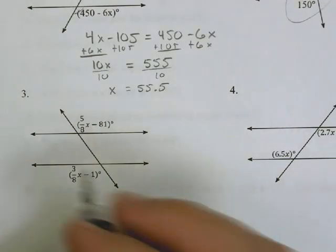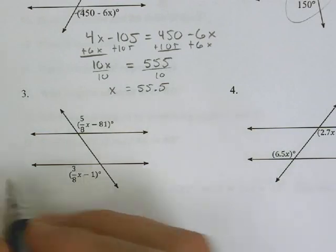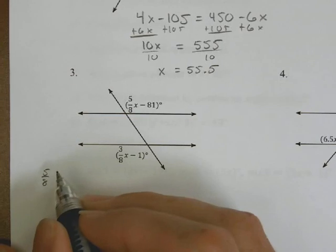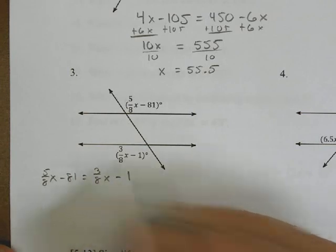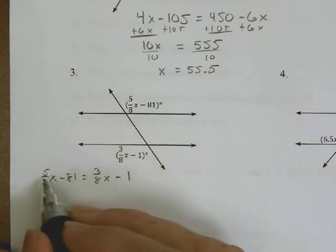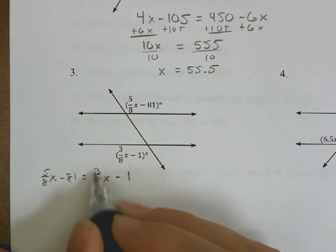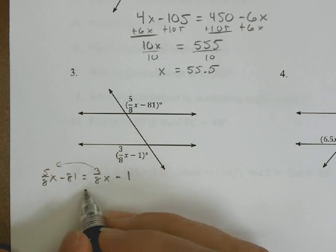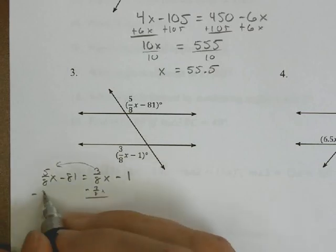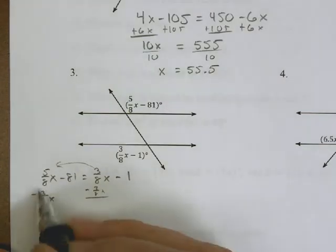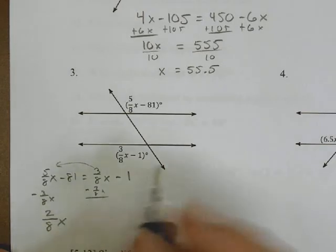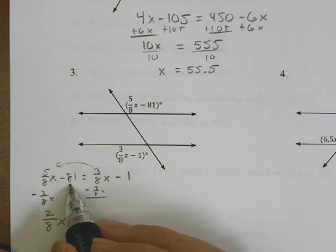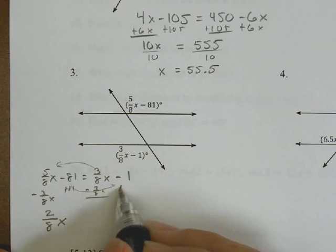Again, alternate exterior angles. So these are going to be set equal to each other. We have 5/8x minus 81 is equal to 3/8x minus 1. Because I have a 5/8 and a 3/8, I'm going to subtract 3/8x from this side and subtract 3/8x from this side. Because I have the same denominator, I can just do 5 minus 3 is 2. So I know I have 2/8x so far. I'm going to move the whole number, 81, over to here by adding 81 to both sides. So a negative 1 plus 81 is going to be equal to 80.